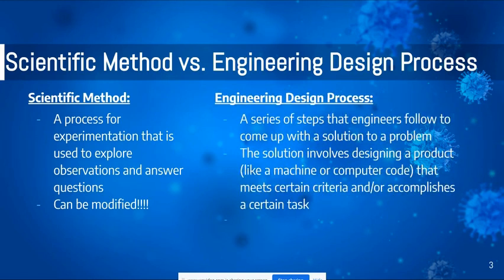The engineering design process is a series of steps that engineers follow to come up with a solution to a problem. The solution involves designing a product — like a machine or computer code — that meets certain criteria and/or accomplishes a certain task.